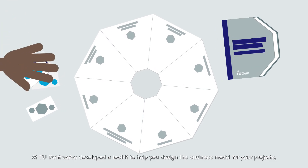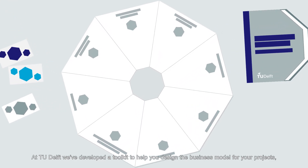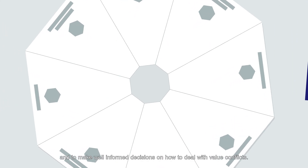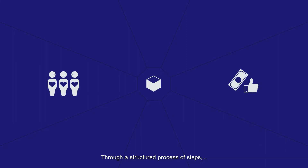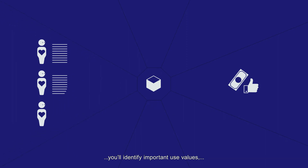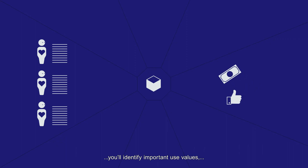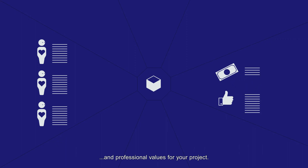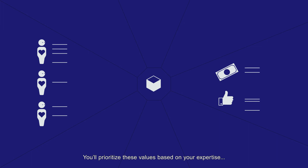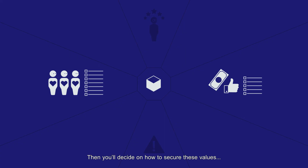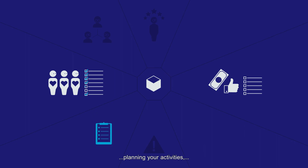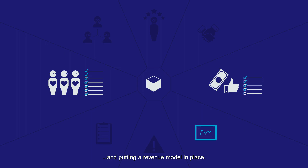At TU Delft, we've developed a toolkit to help you design the business model for your projects and to make well-informed decisions on how to deal with value conflicts. Through a structured process of steps, you'll identify important use values – financial and professional values for your project. You'll prioritize these values based on your expertise and the risks involved. Then you'll decide on how to secure these values by picking the right project partners, planning your activities, setting up collaboration agreements, and putting a revenue model in place.